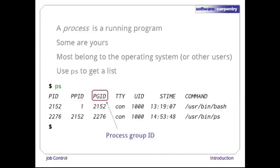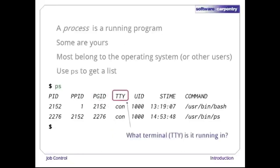The third column is the ID of the process group this process belongs to. Column 4 shows the ID of the terminal this process is running in. If a process is a system service, such as a network monitor, ps will display a question mark for its terminal, since it doesn't actually have one. Column 5 is the user ID of the user this process is being run by — the process is allowed to access exactly the same things as the user.